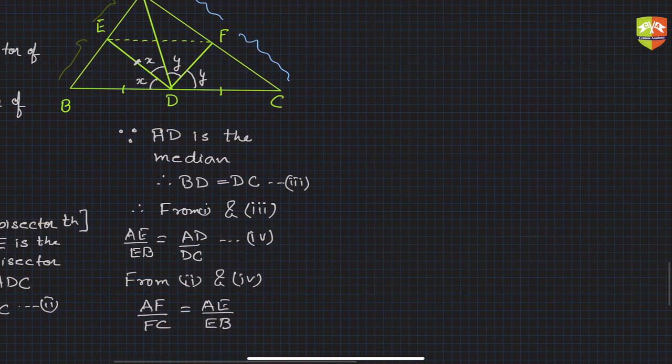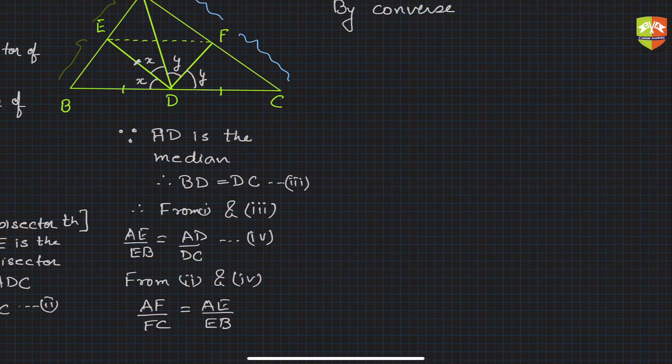Hence we can say by converse of basic proportionality theorem, EF is parallel to BC. This is what we had to prove, and we got it.